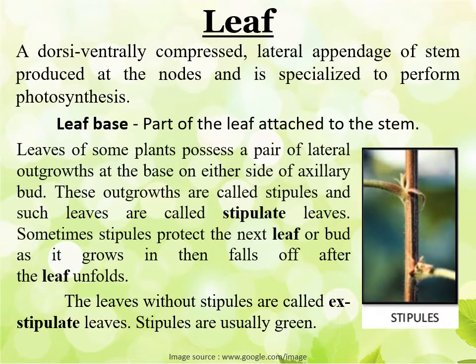Starting with leaf. Leaf is a dorsal-ventrally compressed lateral appendage which is produced from the stem, particularly from the nodes, and it is particularly specialized for doing photosynthesis — that is the green part of the plant. The portion of the leaf that attaches to the stem is called the leaf base. When leaves are discarded from the plants, we find some kinds of circular to oval-shaped, slightly depressed scar marks, which are formed due to detachment of leaves from the stem.